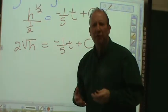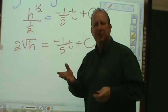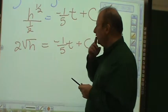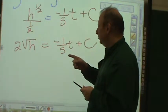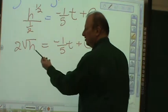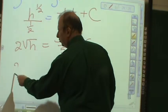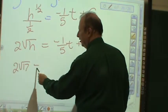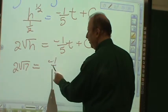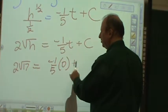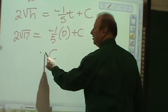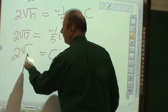Now, I can stop playing around with it. But you know what? I can substitute for c. Work for c at any time. Well, I know when t equals 0, h is 17. So let's look what I have. 2√17 is equal to negative 1/5 times 0 plus c. c is equal to 2√17.